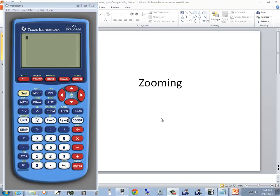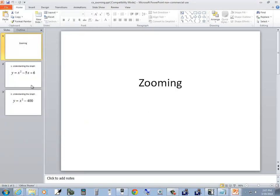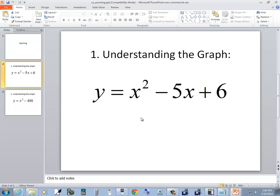Let's take a look at zooming on a TI-73 calculator. We're going to start with this one: y equals x squared minus 5x plus 6.